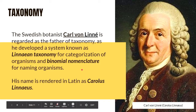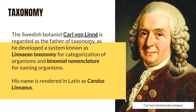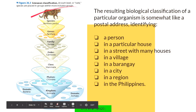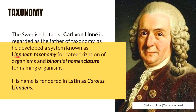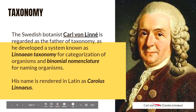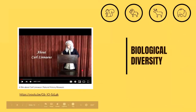The Swedish botanist Carl von Linnaeus is regarded as the father of taxonomy because he was the one who developed the Linnaean system of taxonomy — the Linnaean classification — used for categorization of organisms and binomial nomenclature, which is the method for naming organisms. His Swedish name is Carl von Linnaeus, but he also rendered his name in Latin as Carolus Linnaeus. You can see his painting here. To learn more about his life, I recommend the video from the Natural History Museum entitled "A Film by Carl Linnaeus" — link in the description below.